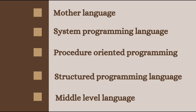C is a structured programming language. In a structure, there are many chances of error in the program, so it is important to understand structured programming. C is also a middle-level programming language, as discussed in the last video — there are three levels of programming language.